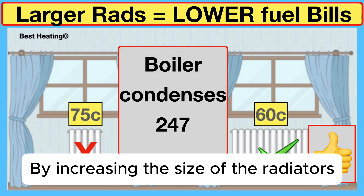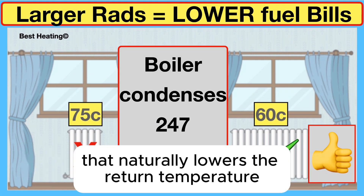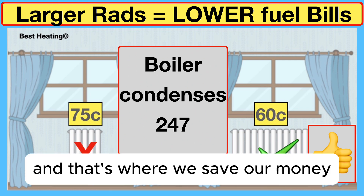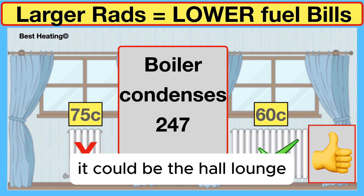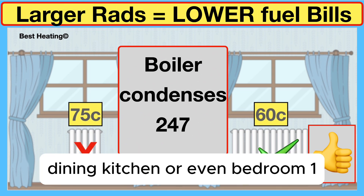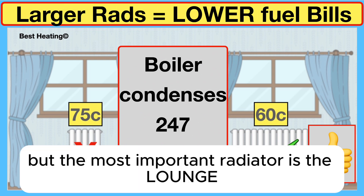By increasing the size of the radiators, that naturally lowers the return temperature going back to the boiler, and that's where we save our money. So look at the largest radiator in your house — it could be the hall, lounge, dining, kitchen, or even bedroom one. But the most important radiator is the lounge.